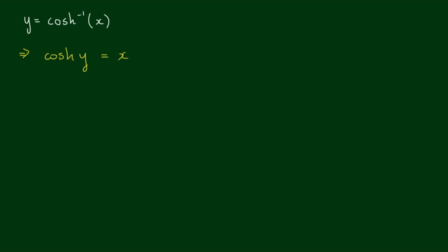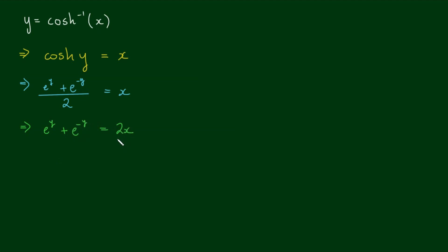By the definition of the hyperbolic cosine function, we have e to the y plus e to the negative y on 2 is equal to x. So let's rearrange this expression a bit. We can say that e to the y plus e to the negative y is equal to 2x.